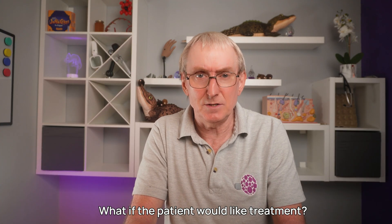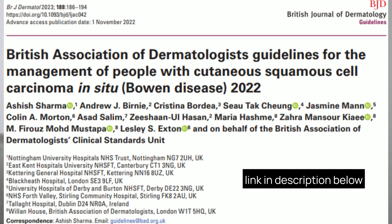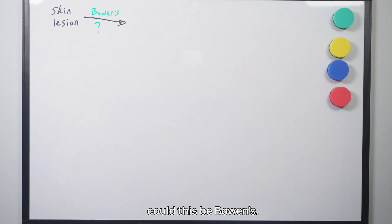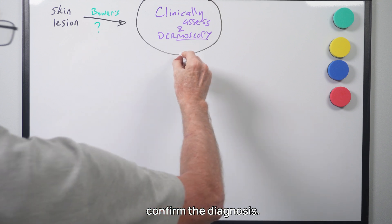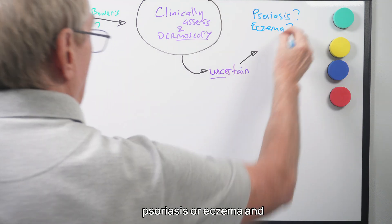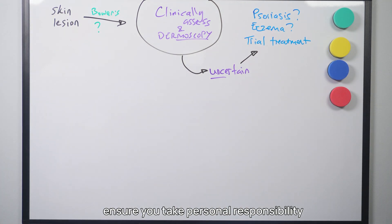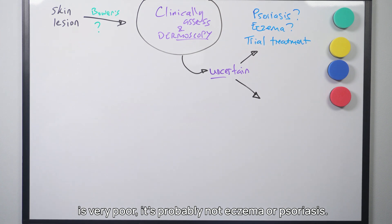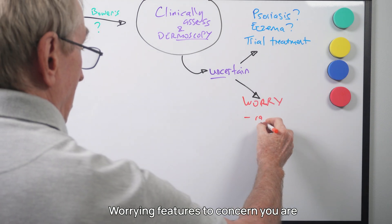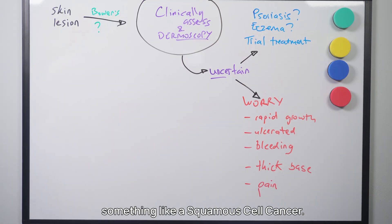If the patient would like treatment, here is my simple treatment decision-making process, based on the 2022 British Association of Dermatologists guidelines. Consider Bowen's when assessing any relevant skin lesion. Use clinical assessment and dermoscopy to confirm. If uncertain, consider whether it could be psoriasis or eczema and discuss a therapeutic trial using a potent steroid cream, ensuring follow-up three to four weeks later. If the response to steroid cream is very poor, it's probably not eczema or psoriasis. Worrying features — rapid growth, ulceration, bleeding, a thickened base, and pain — are much more common in squamous cell cancer.